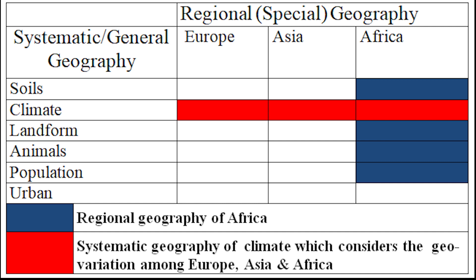On the other hand, regional geography is concerned with the associations within regions of all, or some of the elements and their interrelationships. It is also known as special geography. According to Hartshorne, regional geography is the study of all the features of a given region, any two-dimensional area of interest. For example, if we take a particular region, let's say Africa, and study the landform, climate, demography, vegetation etc., it is regional geography.